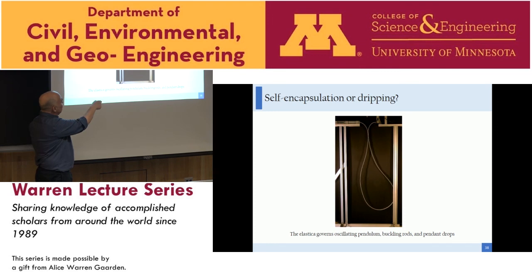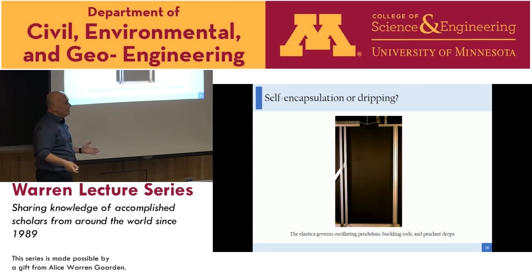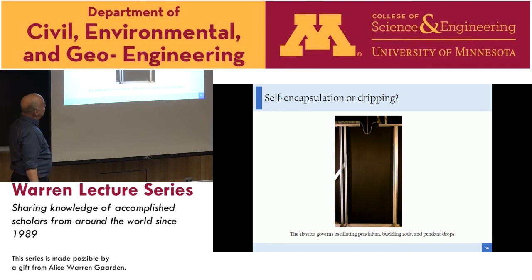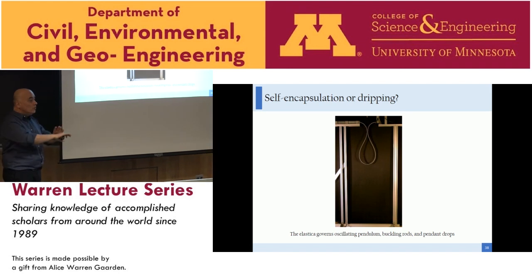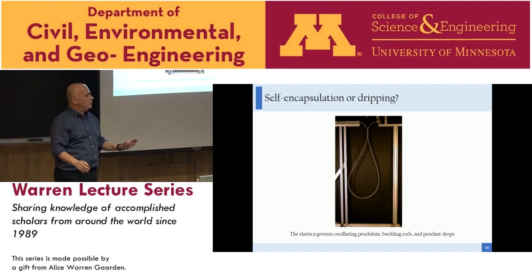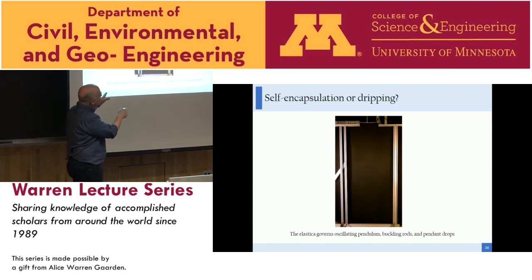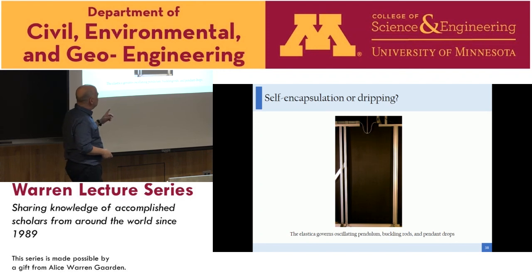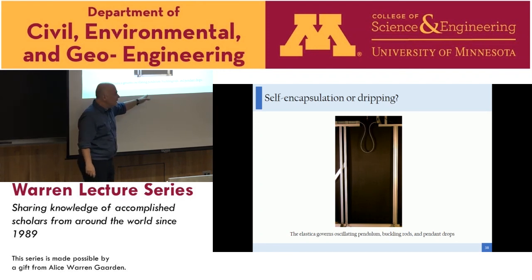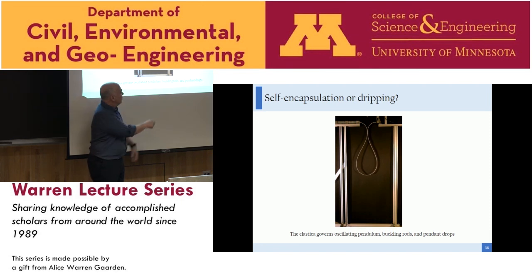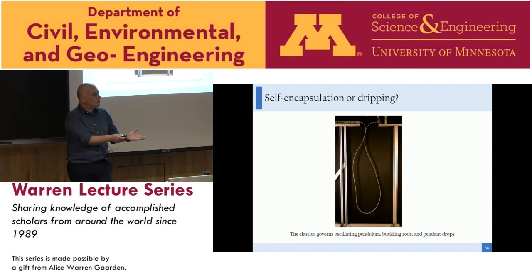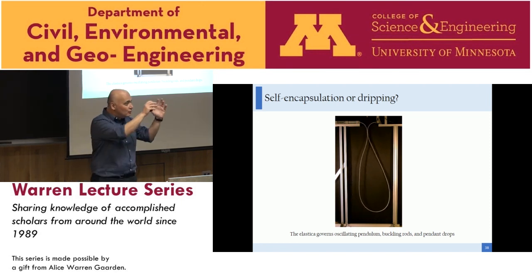Interestingly, the shape of the elastic rod resembles a droplet, but this is not by chance — the elastica governs the oscillating pendulum, buckling of rods, and the shape of pendant drops. So the droplet shape is a natural consequence.